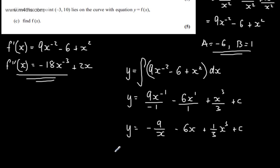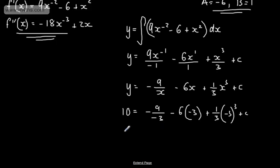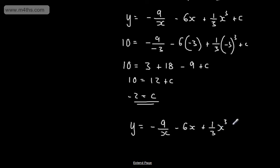Now let's consider the point (minus 3, 10). Substituting in: 10 equals minus 9 over minus 3, minus 6 times minus 3, plus one third of (minus 3) to the power of 3, plus c. Working this out: 10 equals 3 plus 18, minus 9, plus c, so 10 equals 12 plus c, which gives c equals minus 2. Writing the full answer: y equals minus 9 over x, minus 6x, plus one third x cubed, minus 2.